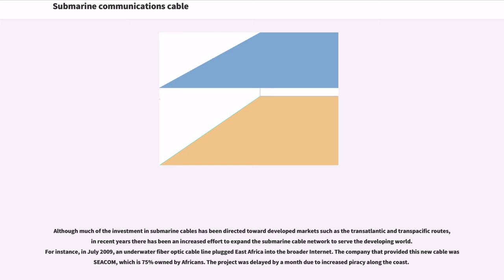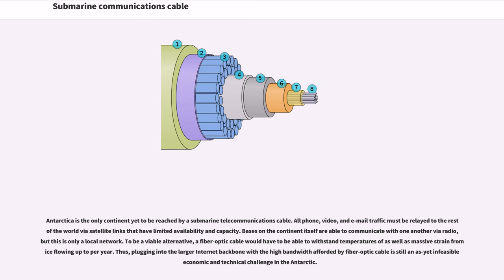Although much of the investment in submarine cables has been directed toward developed markets such as the transatlantic and trans-Pacific routes, in recent years there has been an increased effort to expand the submarine cable network to serve the developing world. For instance, in July 2009, an underwater fiber-optic cable plugged East Africa into the broader internet. The company that provided this new cable, WASICOM, is 75% owned by Africans. The project was delayed by a month due to increased piracy along the coast. Antarctica is the only continent yet to be reached by a submarine telecommunications cable; all phone, video, and email traffic must be relayed via satellite links with limited availability and capacity. A fiber-optic cable would have to withstand temperatures as well as massive strain from ice flowing up to per year, making it still an infeasible economic and technical challenge.